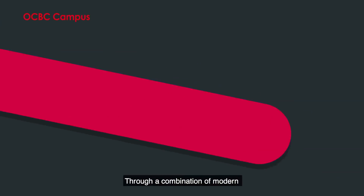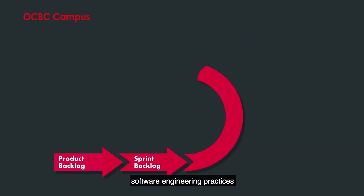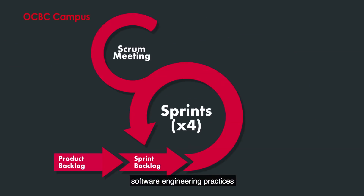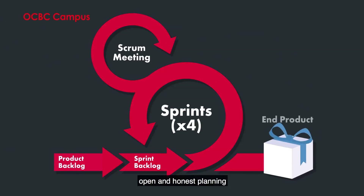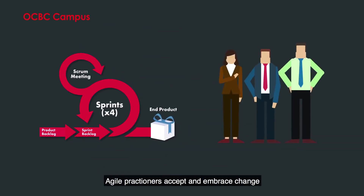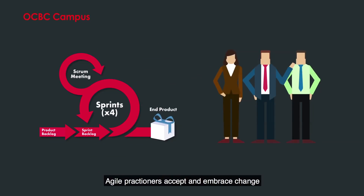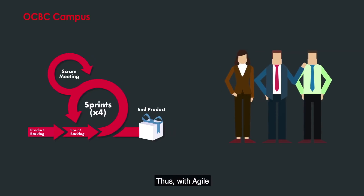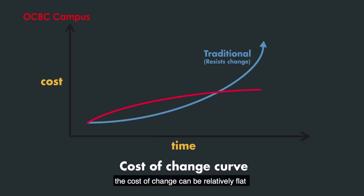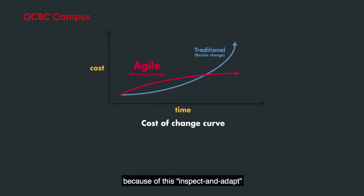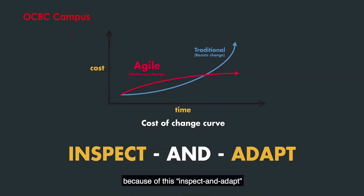Through a combination of modern software engineering practices and open and honest planning, Agile practitioners accept and embrace change even late in the delivery process. Thus, with Agile the cost of change can be relatively flat because of this inspect and adapt approach to development.